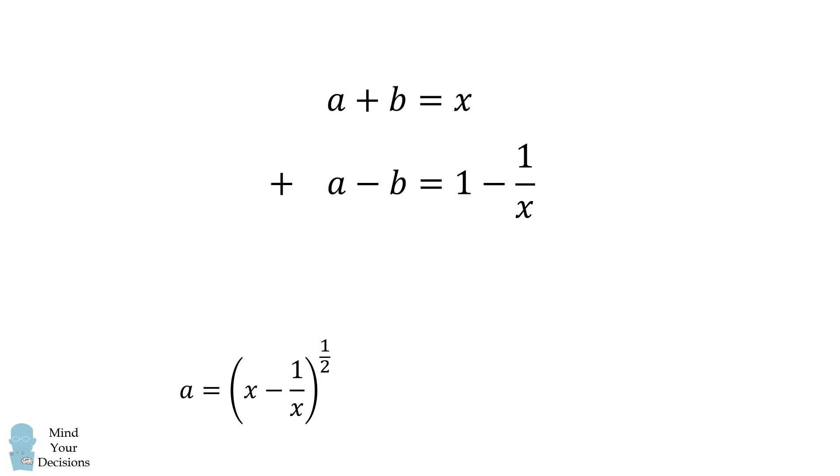We will then add these two equations together. Notice that the b terms cancel out. So we have 2a is equal to x plus 1 minus 1 over x. We then simplify the right-hand side. Notice that x minus 1 over x is equal to a squared. So we have 2a is equal to a squared plus 1.